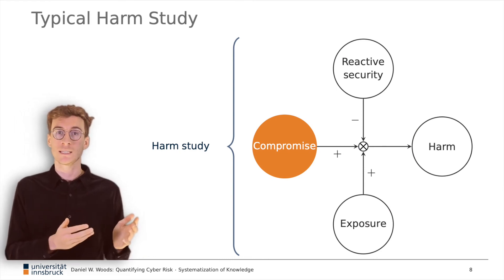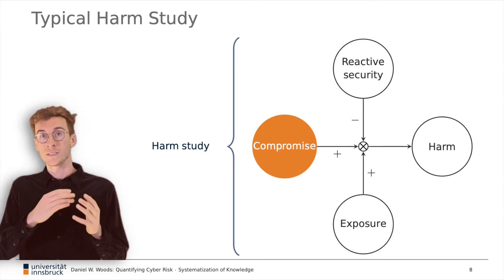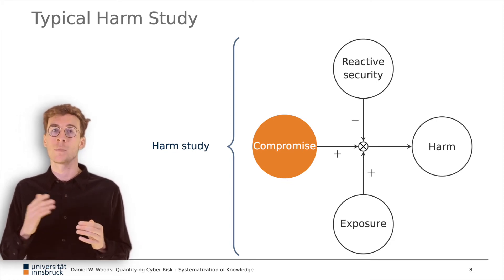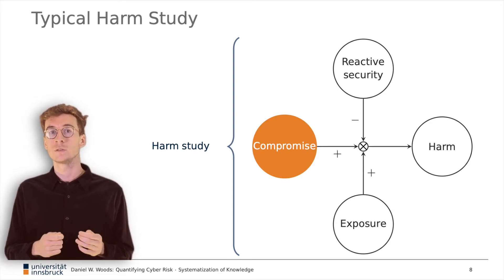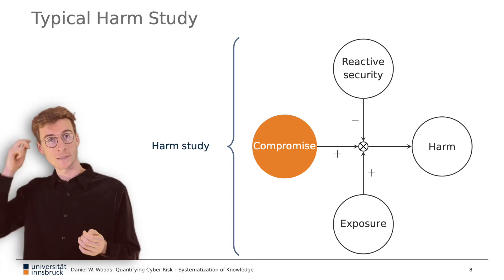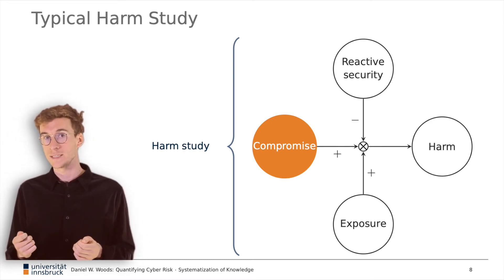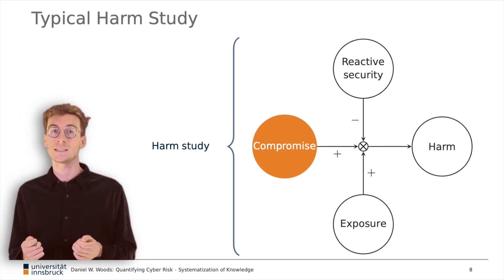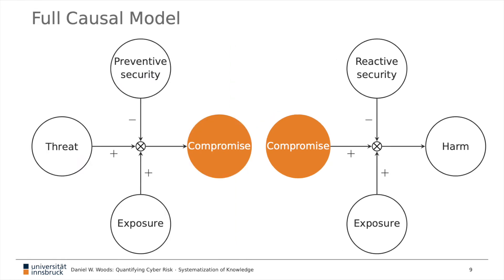Turning to cyber harm studies, we find that these studies try to quantify how harm varies among a population of compromised firms. Indicators of harm include the number of records lost in a data breach or the loss in shareholder value following a cyber incident. Such designs can say nothing about preventative security because they only sample firms where compromise is equal to one. So we have two types of studies: one with compromise as the outcome variable, and the other with compromise as an input variable.